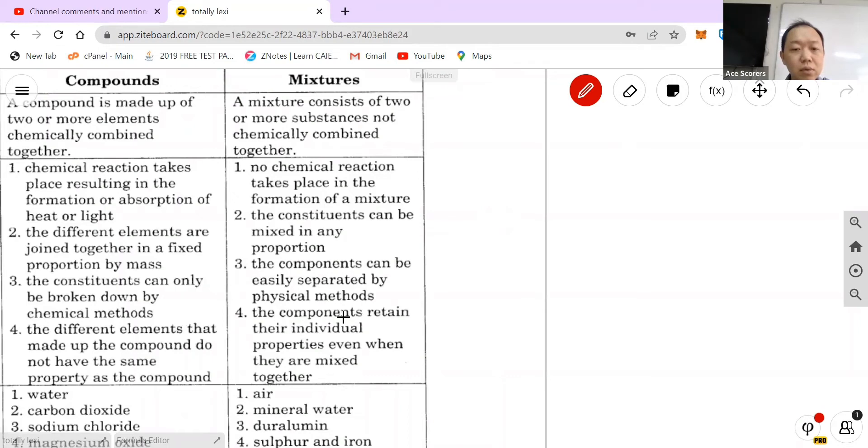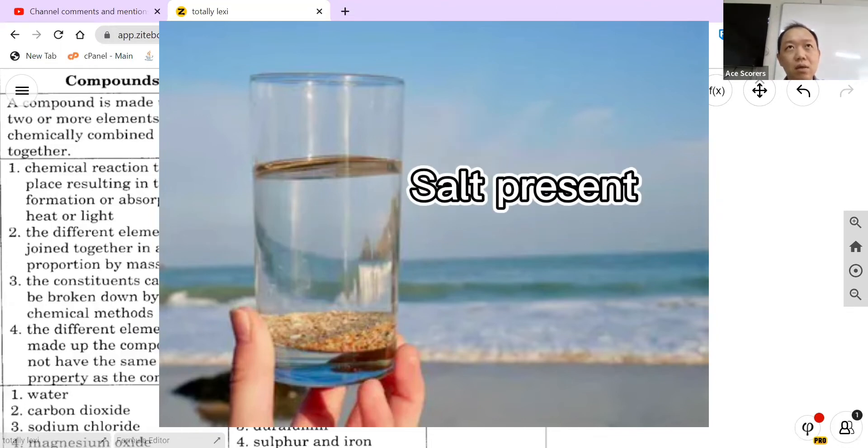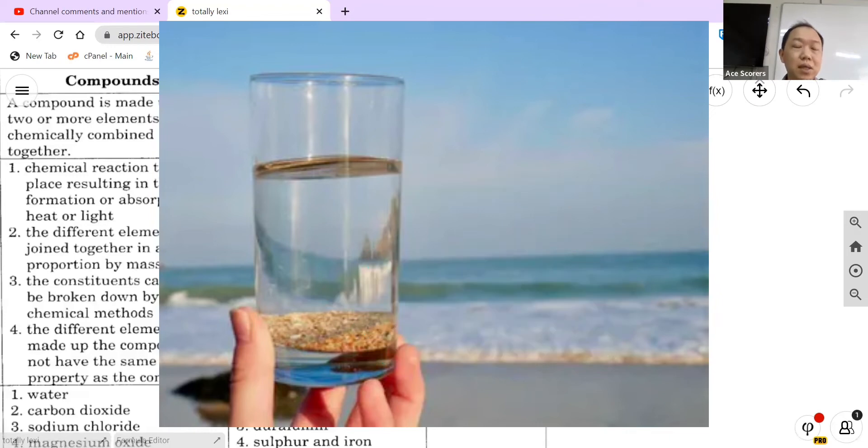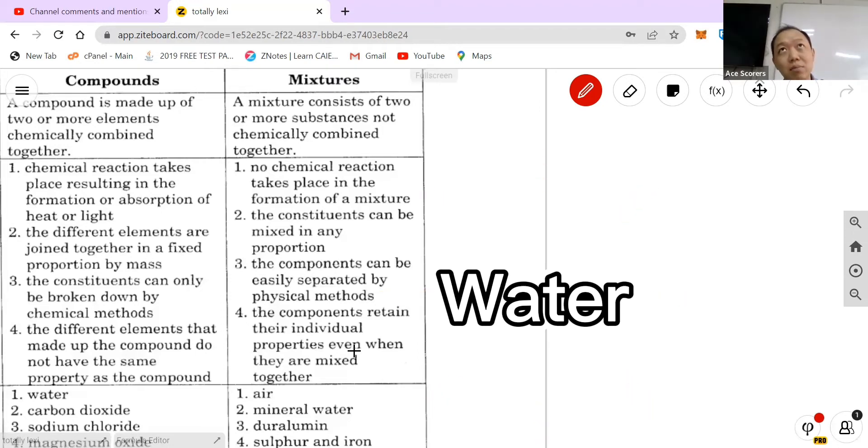Last one, the components retain their individual properties even when they are mixed together. So for example, seawater again, when you take water and salt, you mix them together, you will still be able to taste or experience the characteristics of the components which is water and salt. Whereas a compound is different. So for example, you take hydrogen and oxygen and mix them together, you get a completely new thing which is liquid, whereas by itself, hydrogen and oxygen is just a gas.